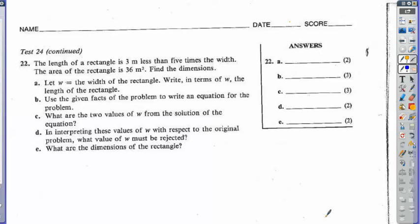All right, the length of a rectangle is three meters less than five times its width, and the area of the rectangle is 36. Find its dimensions.